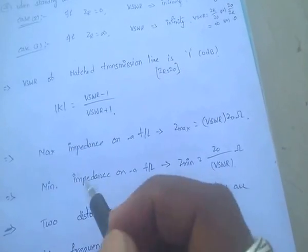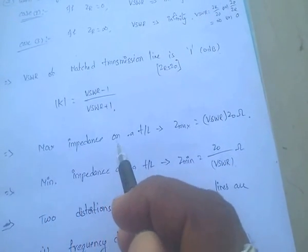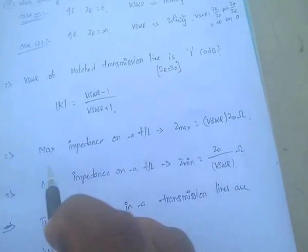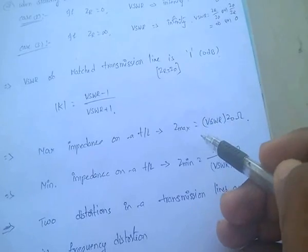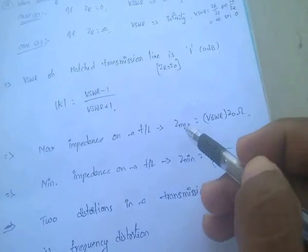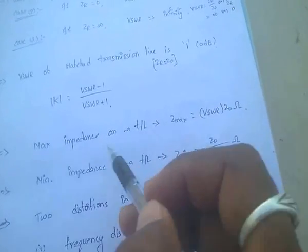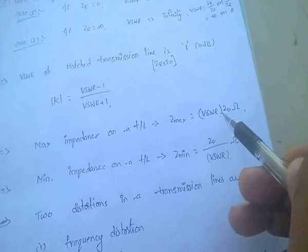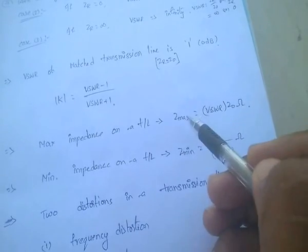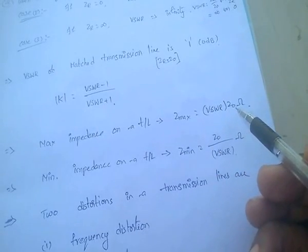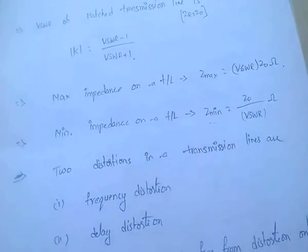Some important formulas: the maximum impedance on a transmission line is Zmax equal to VSWR into Z0. Minimum impedance equals Z0 by VSWR. So Zmax equals VSWR × Z0 and Zmin equals Z0 / VSWR.